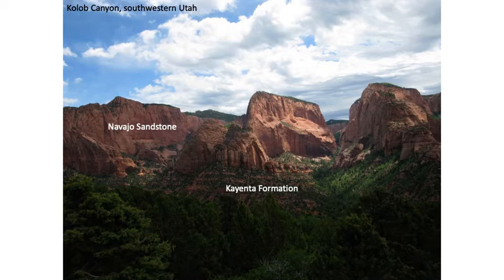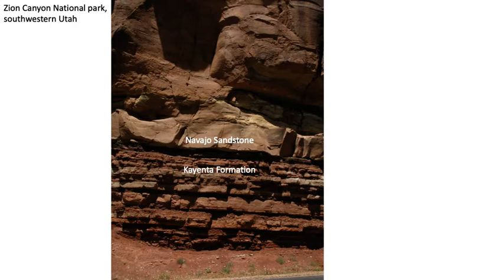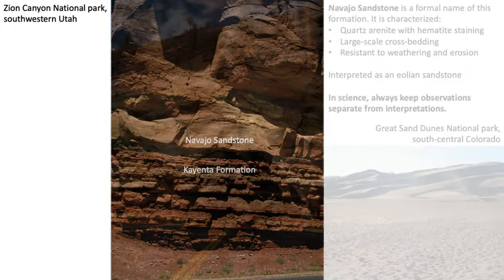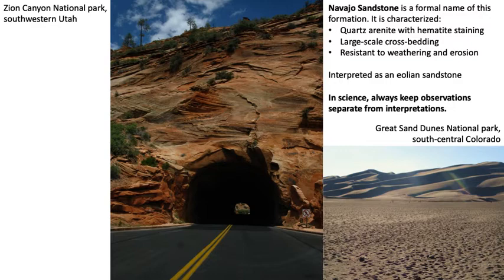Slide 12 shows the contact more closely — the shaly and sandy Chinle Formation is overlaid by the massive Navajo Sandstone, photographed in the main part of Zion National Park close to Springdale, on the road toward the top of Zion Canyon. Slide 13 shows one of the tunnels on the way up, where the aeolian crossbedding is visible. A cross section through the Great Sand Dunes in south-central Colorado would resemble what you see at Zion.